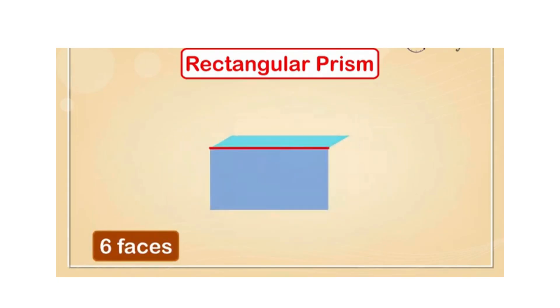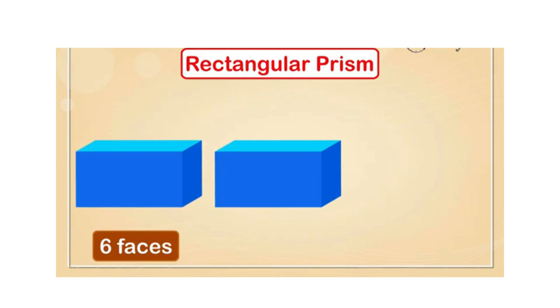The lines where two faces meet are called edges. Let's figure out the number of edges in a rectangular prism. 1, 2, 3, 4, 5, 6, 7, 8, 9, 10, 11, 12 edges.